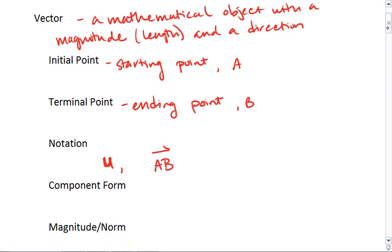Vectors do have a component form. So let's say that initial point a was x1, y1, and b is x2, y2. Then the component form for your vector, which we can name u, or we can name vector ab,